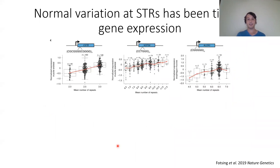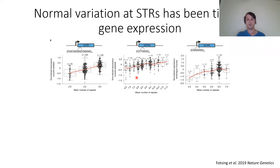Outside of a disease context, STRs can impact gene expression with normal variation. From Fotzin et al. from Melissa Gymrek's lab, looking at CSTB and NOP56, which have repeat expansions within those genes: as the number of repeats increases in CSTB, gene expression also increases — a pretty clear pattern. NOP56 shows the same upward trend but is bumpier. ALOX5 is a hexanucleotide repeat upstream near the promoter, showing a general upward trend in expression, but potentially decreasing as repeats get very long.